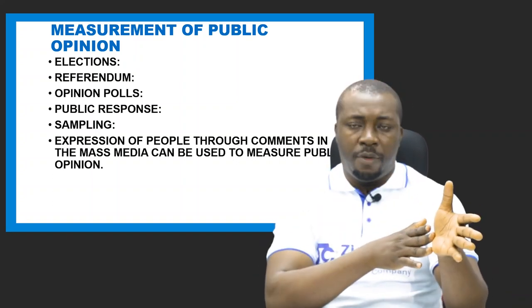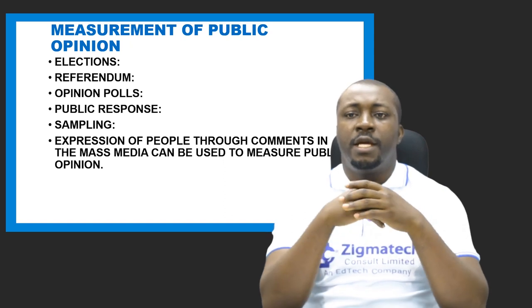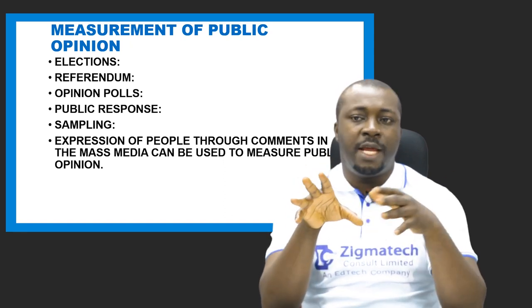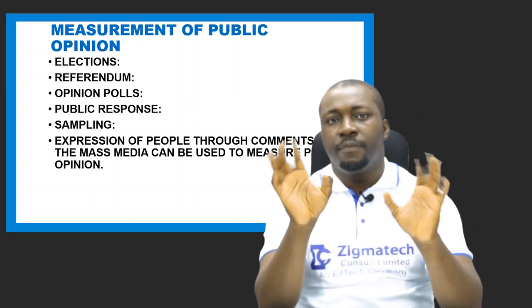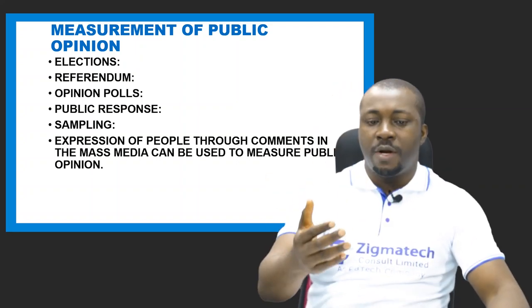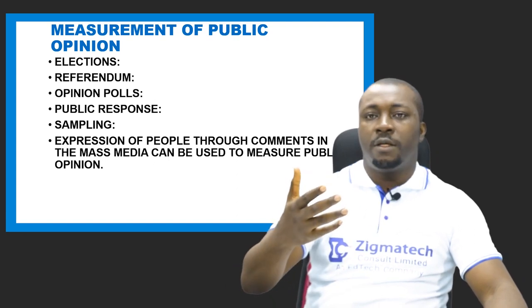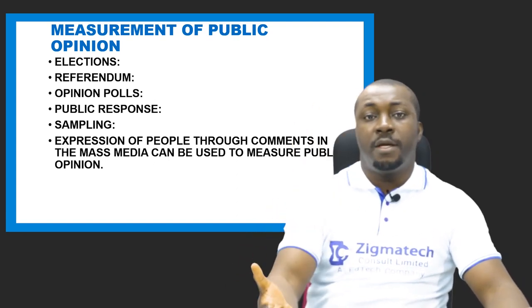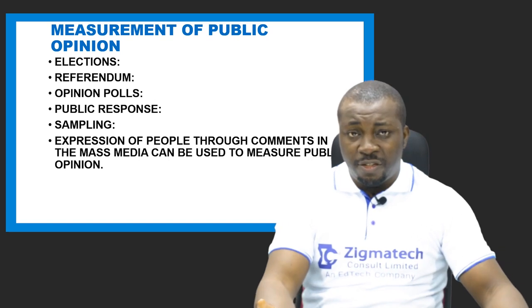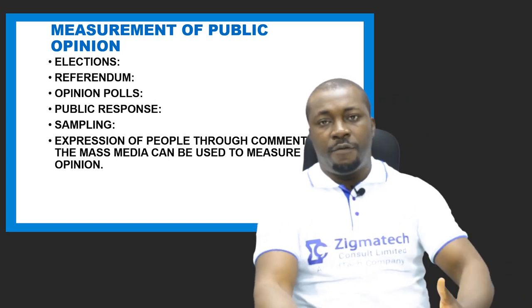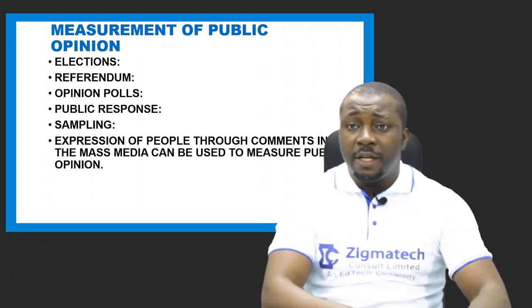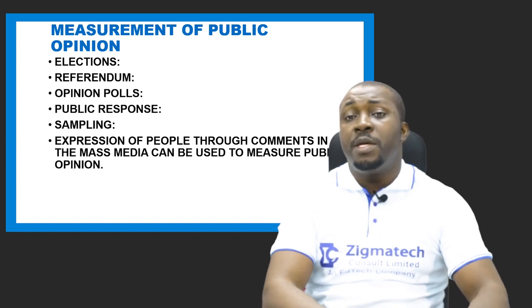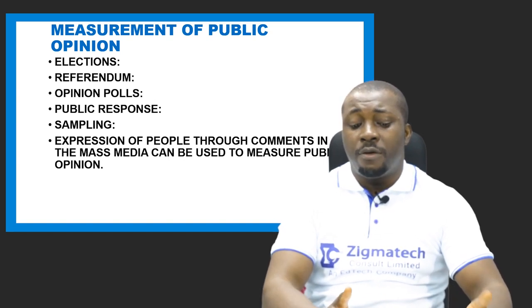Another way to determine public opinion is through expression of people via comments in the mass media. Some media houses have programs where they raise a particular public issue, give their phone number for people to call and share their response. That expression of people through the media can be used to determine public opinion.